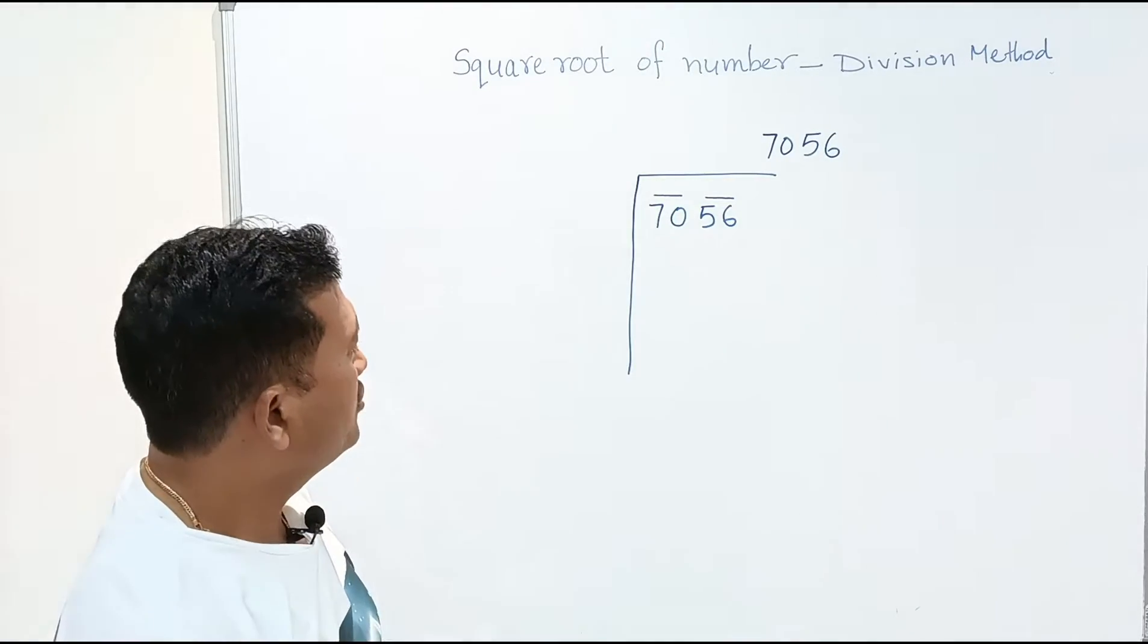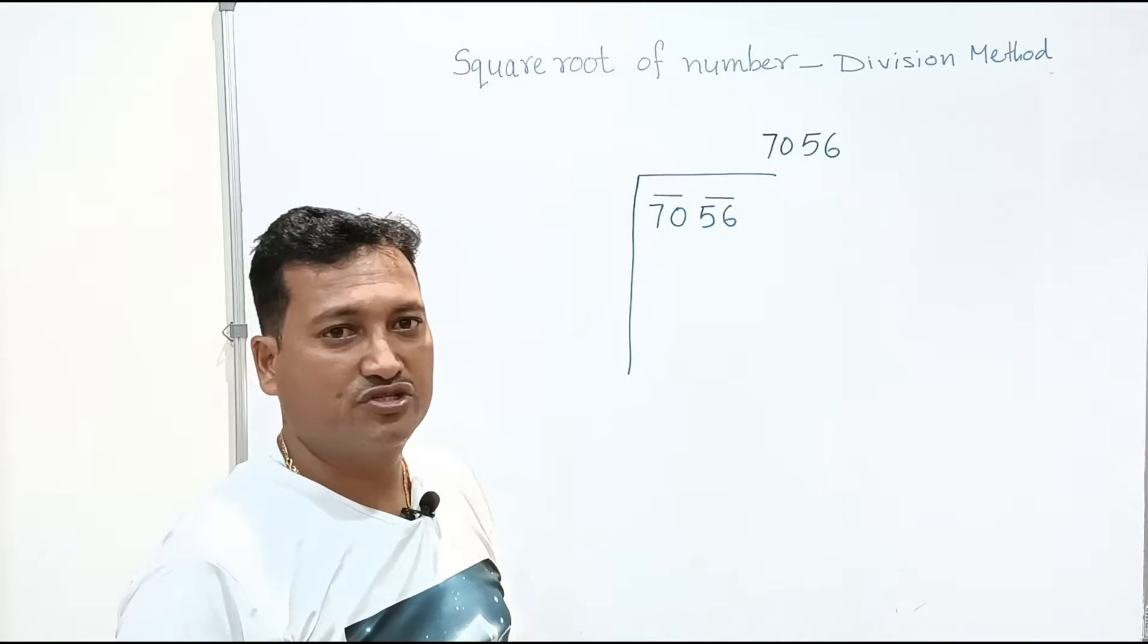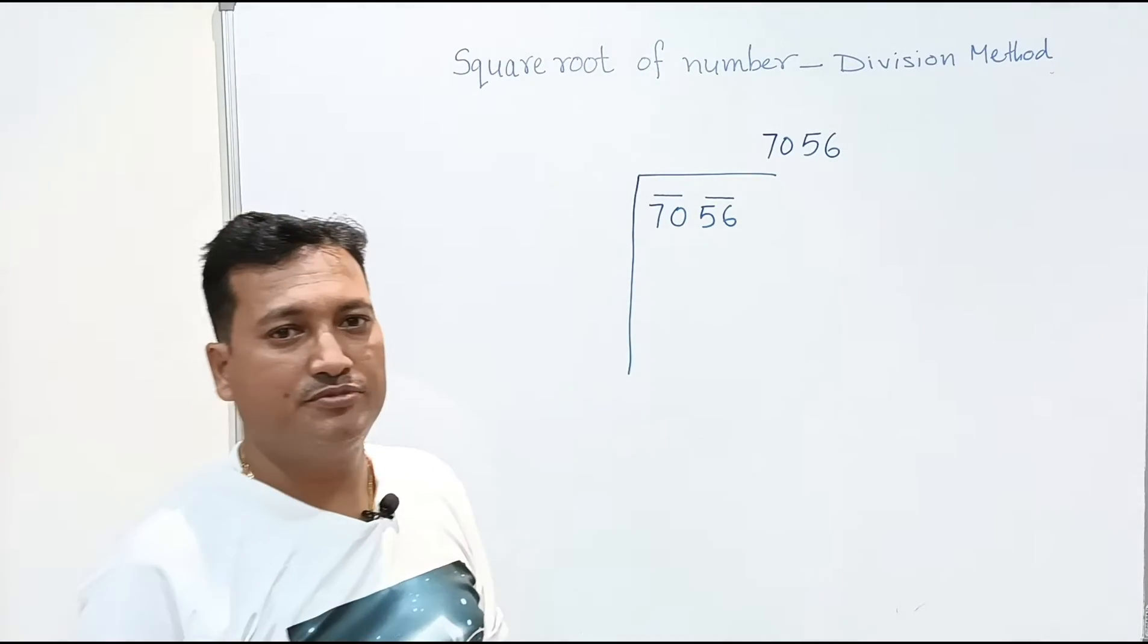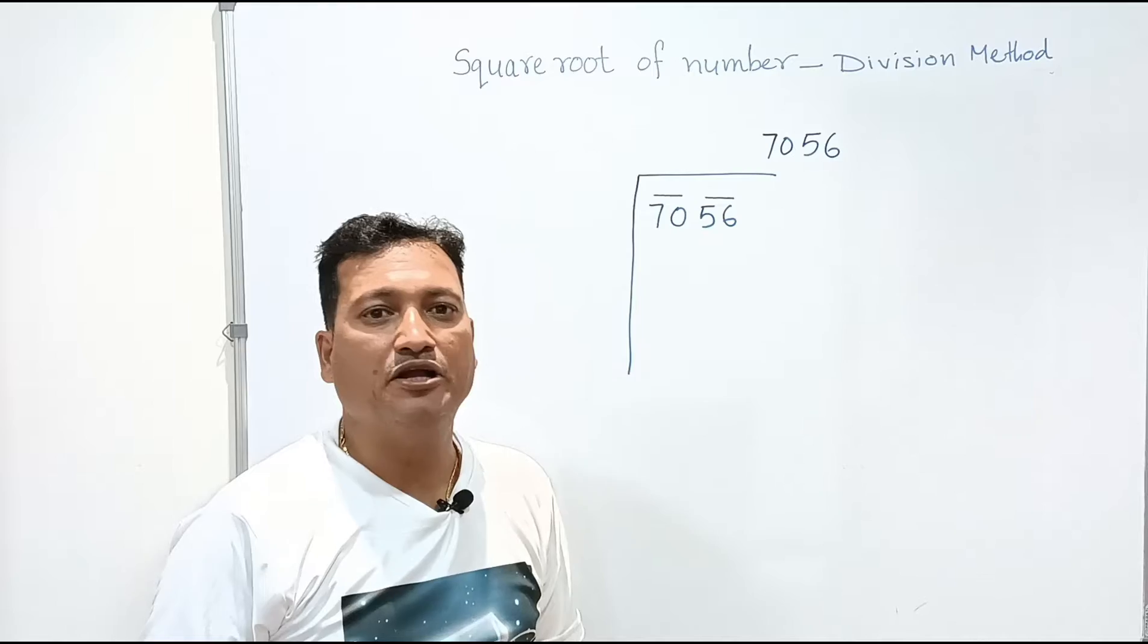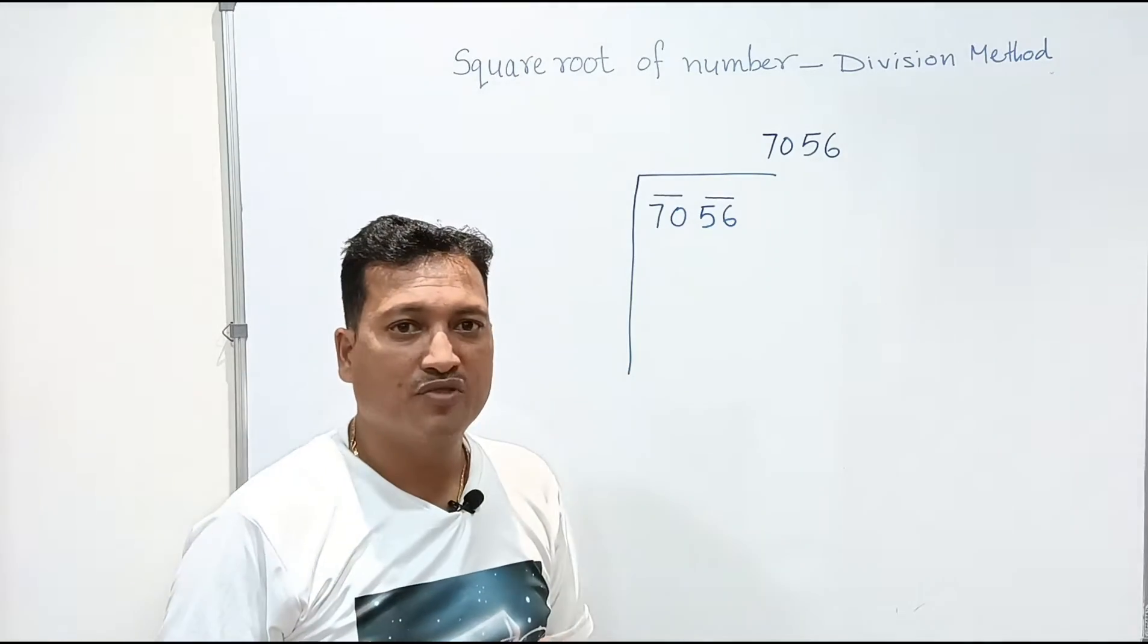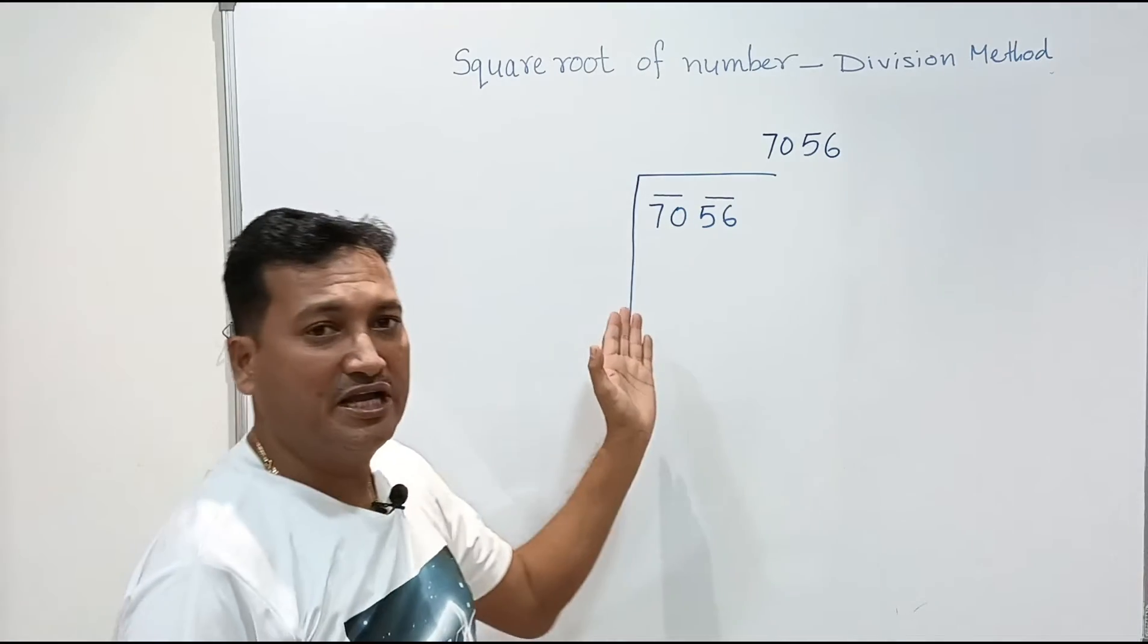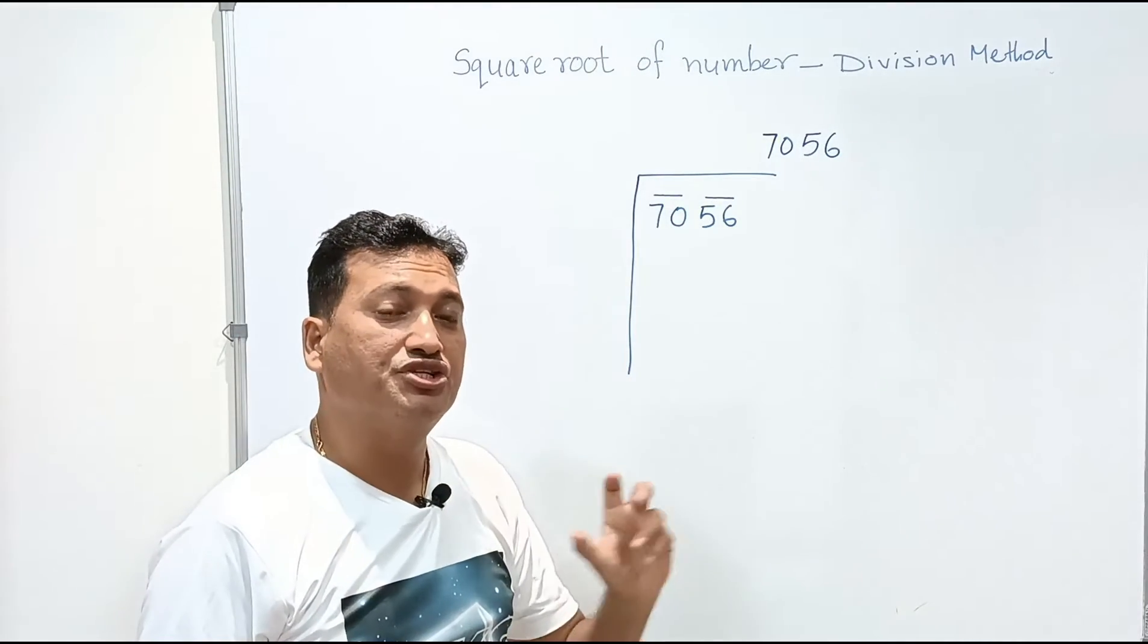Now look at the first group, first pair 70. It is not a perfect square. It is not square of a number. So we need to find out a number which is very close to 70 and perfect square.